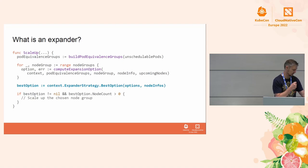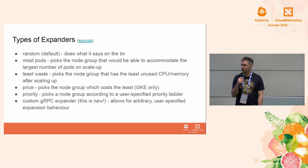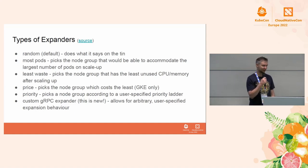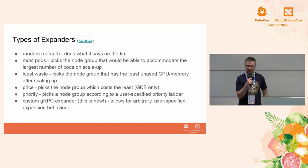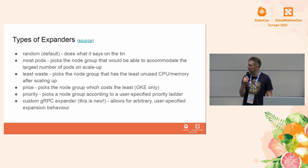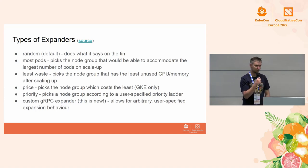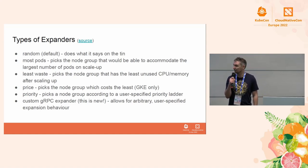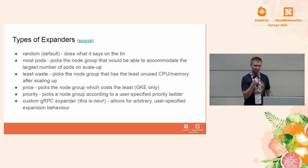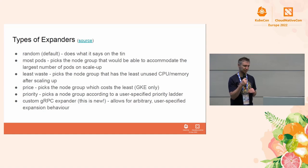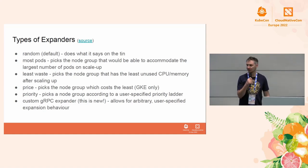The types of expanders available in cluster autoscaler: the default is random — picks a node group at random. Most pods and least waste are complementary — most pods picks the node group that will schedule the most unschedulable pods; least waste picks the node group that will have the least unused CPU and memory after scaling. If you're on GKE, you can pick the cheapest node group. The one we've been using at Airbnb is the priority expander — you specify a prioritized list of node groups and the expander picks the highest priority one that can accommodate your unschedulable pods.